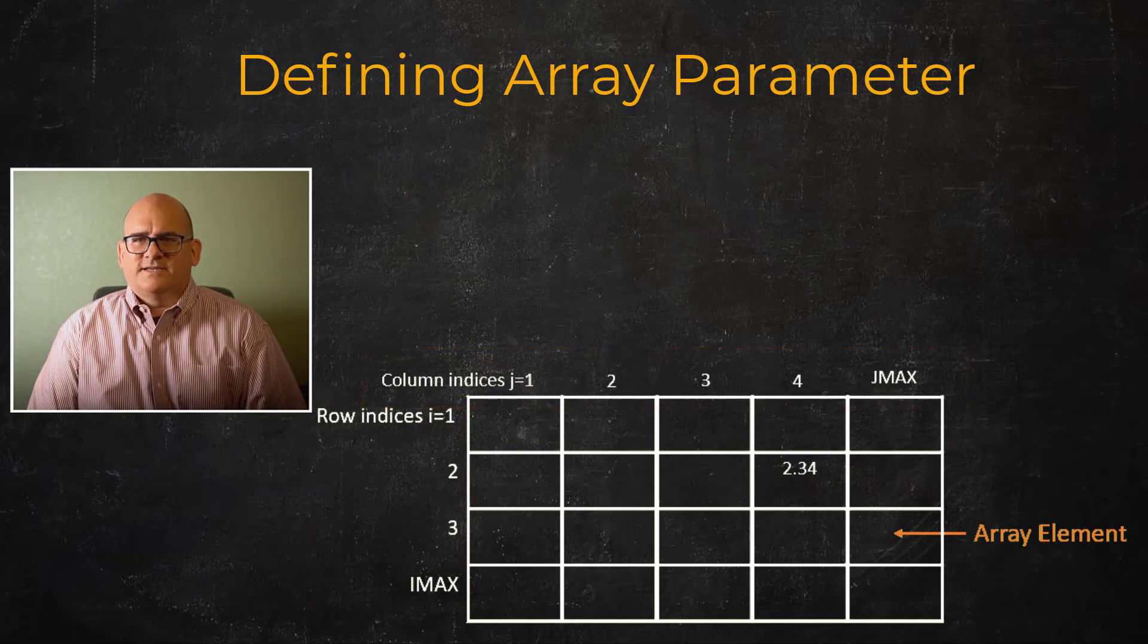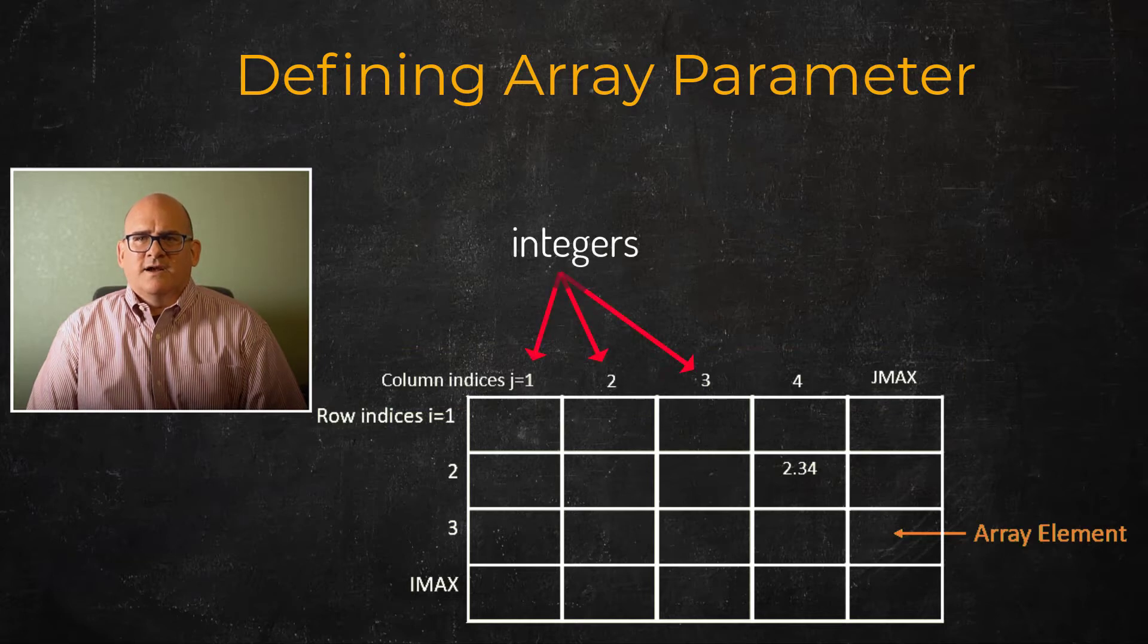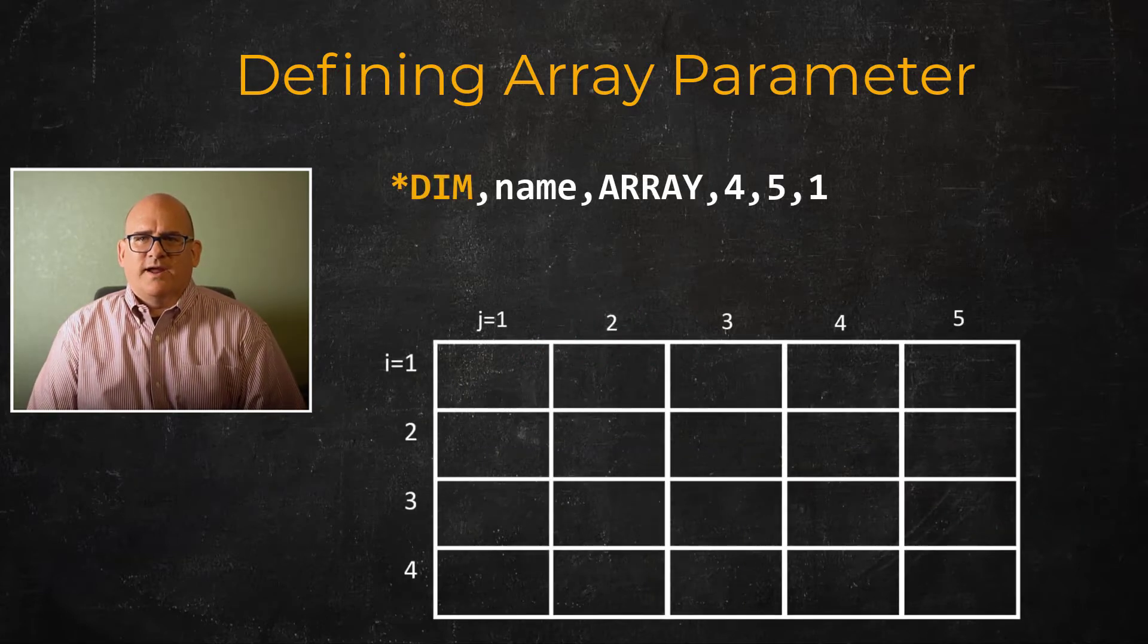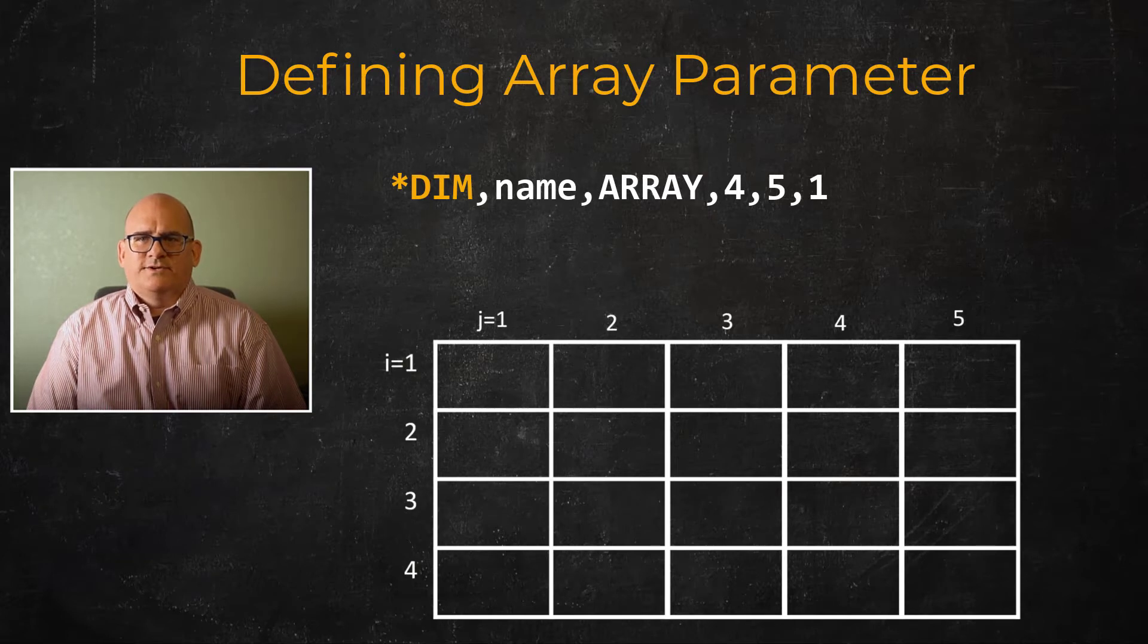What differentiates arrays and tables are the indices. Arrays have integer indices that start at one. Array elements are defined as parameter name i,j for a 2D array.